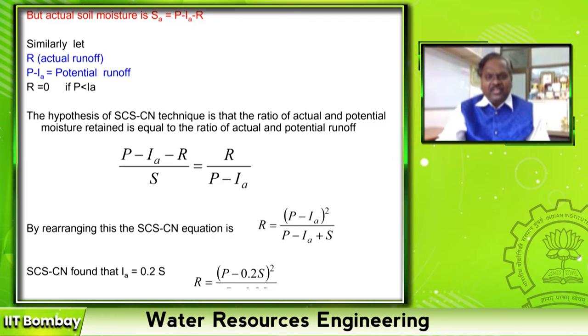S is the maximum soil moisture condition. The second unknown is IA — the initial abstraction. Researchers have assumed initial abstraction can be 0.2 times S or 0.3 times S. Substituting IA = 0.2S, the runoff equation becomes R = (P − 0.2S)² / (P + 0.8S). This is the basic equation used in the SCS curve number technique. The measured value is P and the unknown is S.